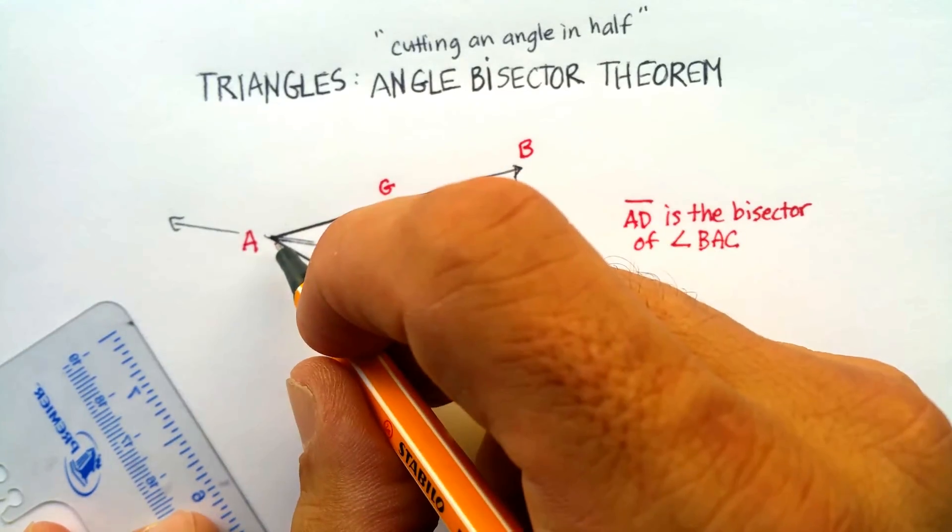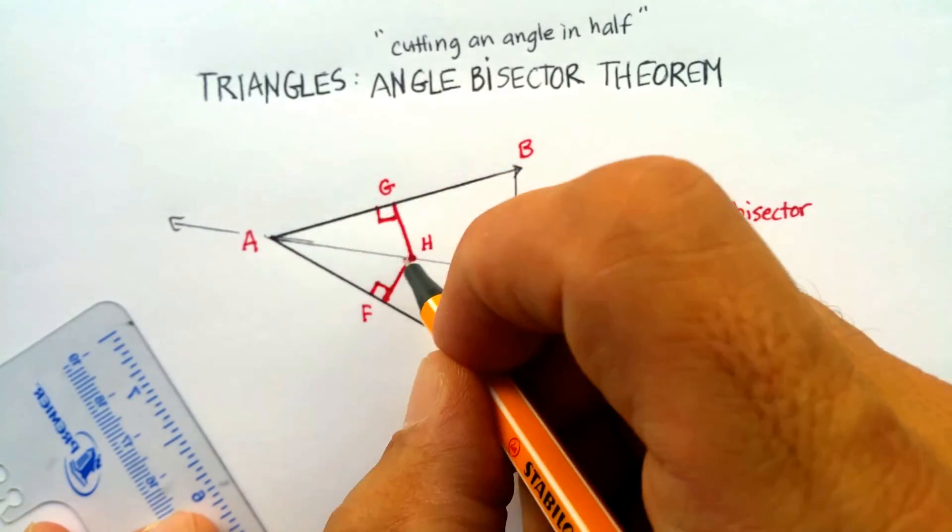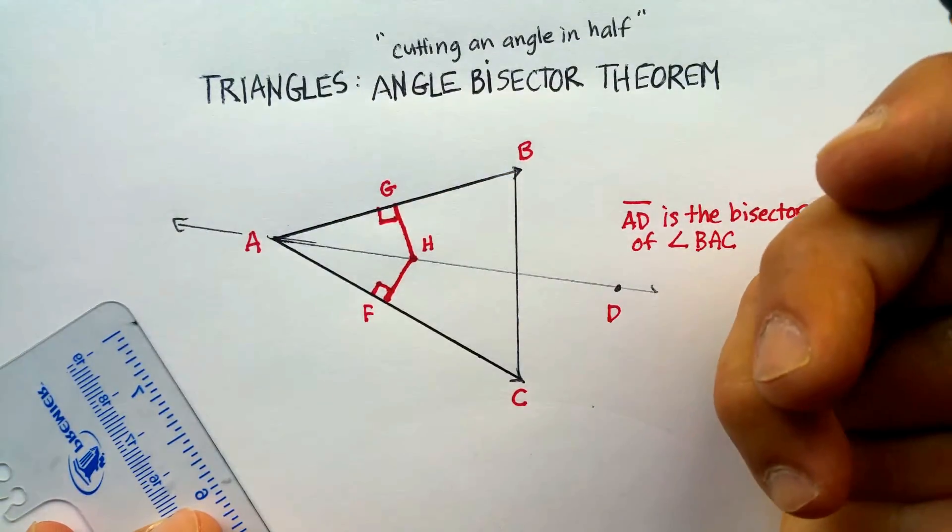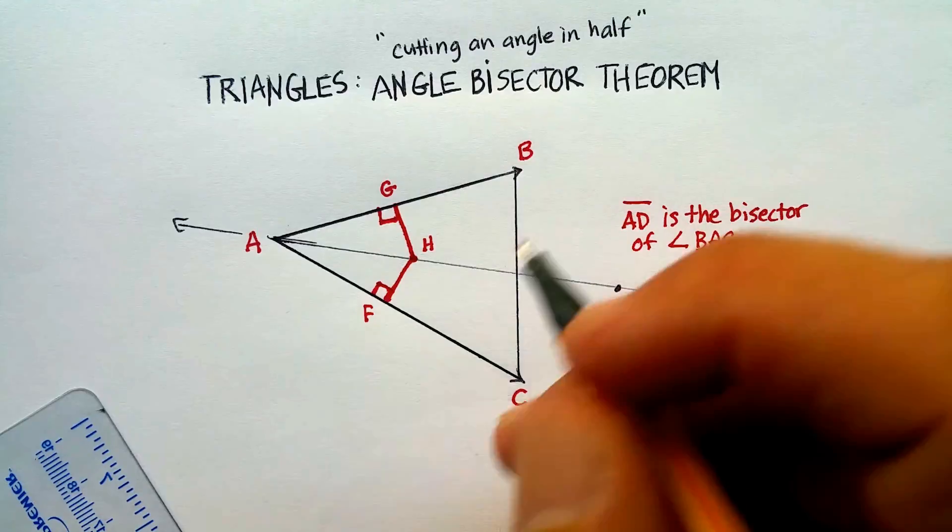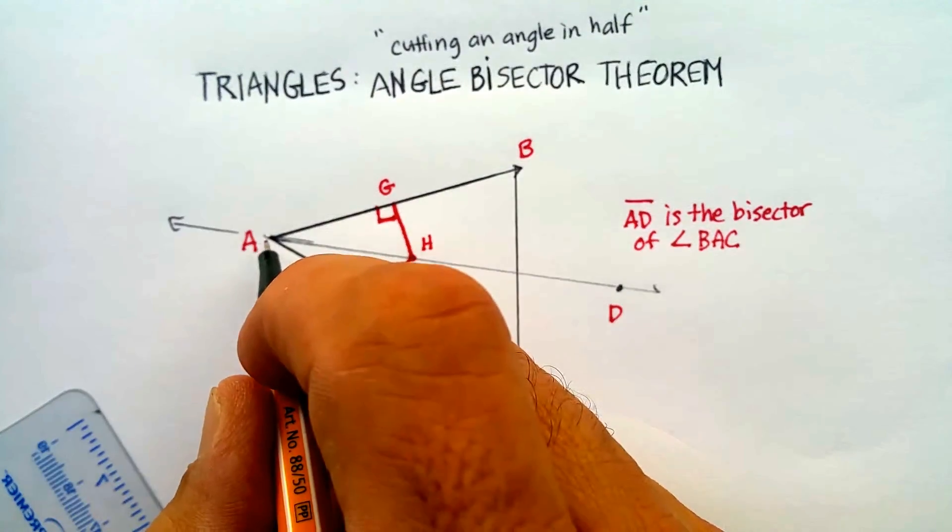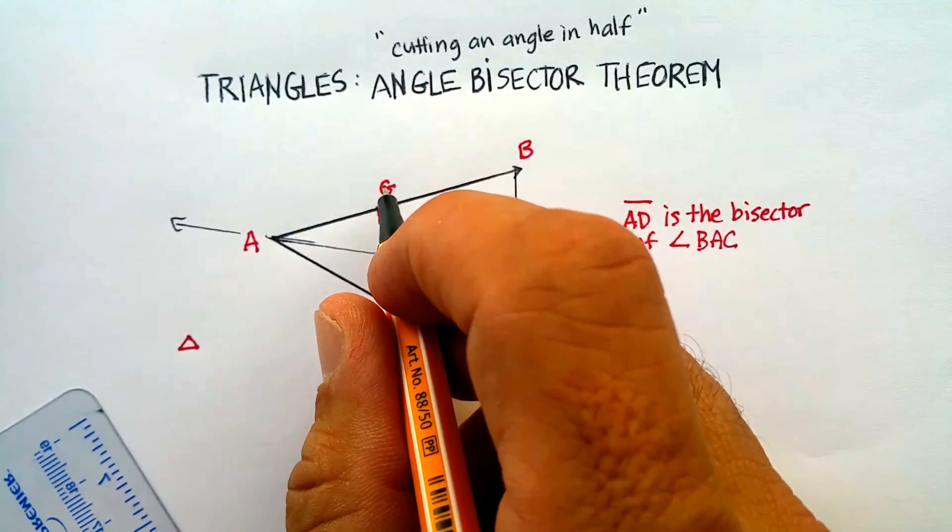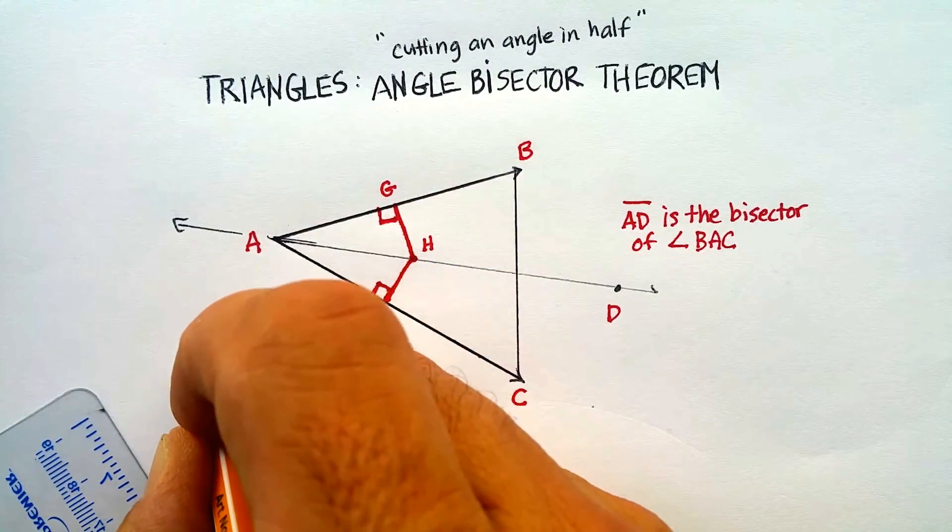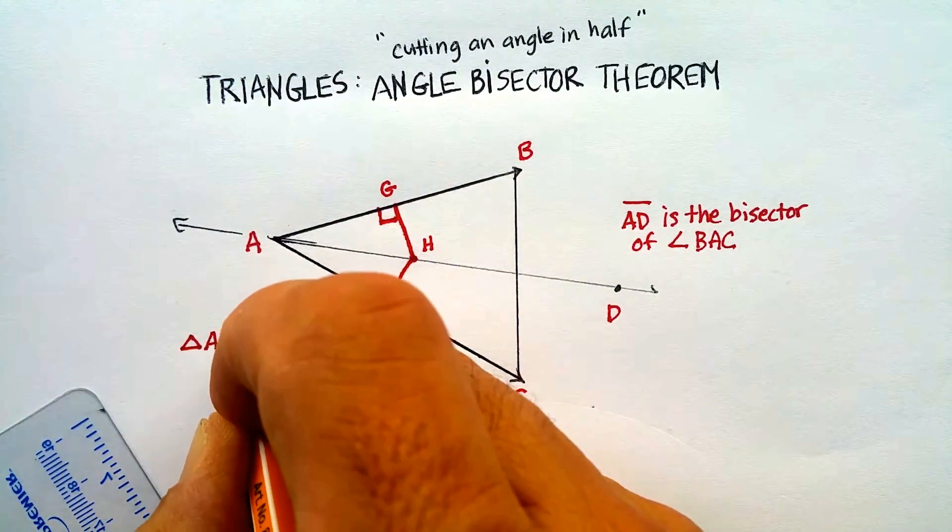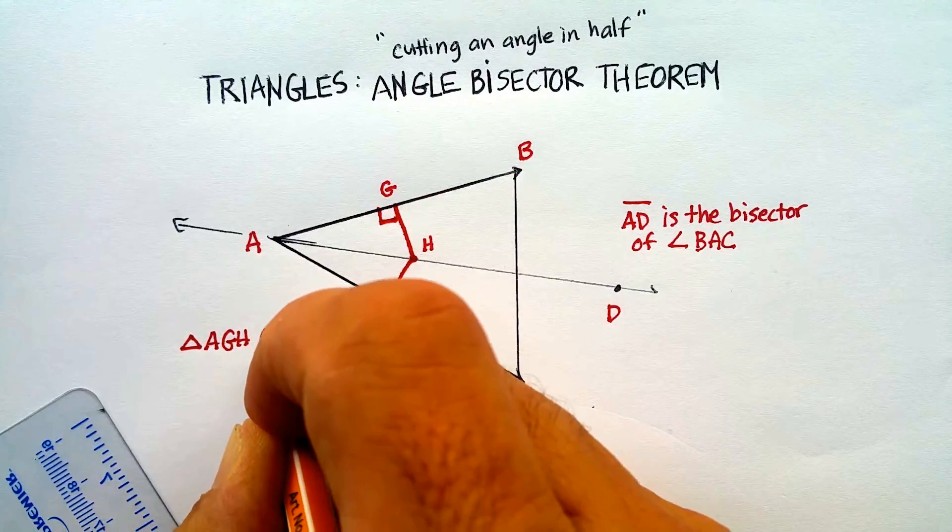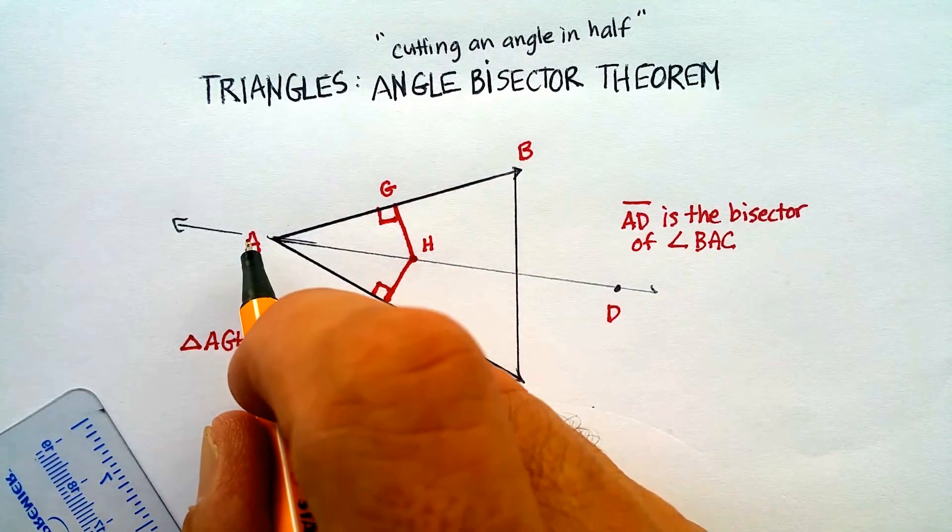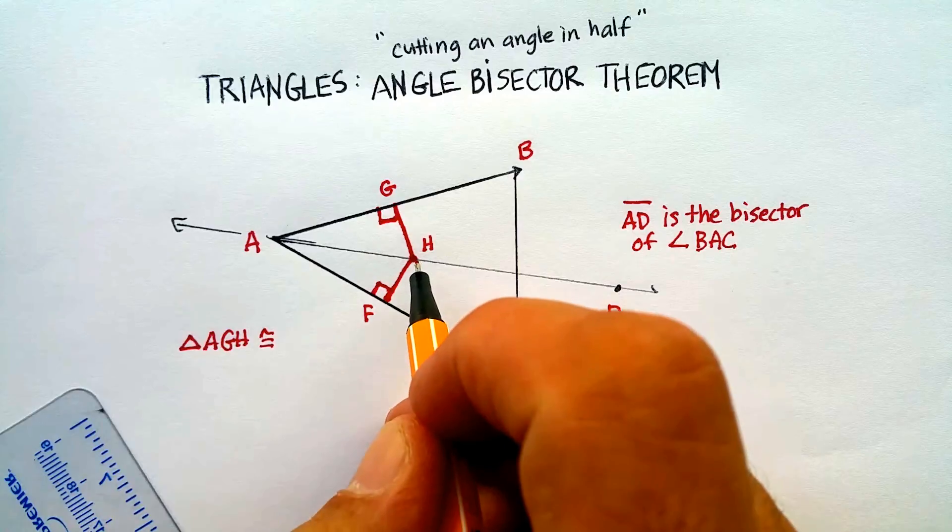This triangle and this little triangle are congruent. So here are some of the properties. I could say triangle A-G-H is congruent to triangle A-F-H.